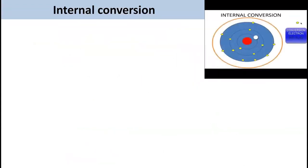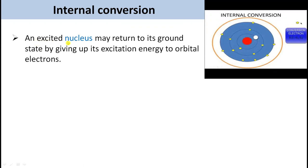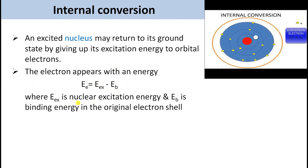Another source of fast electrons is internal conversion. An excited nucleus may return to its ground state by giving up its excitation energy to orbital electrons. The emitted electron has a kinetic energy equal to the lost nuclear excitation energy minus the binding energy of the electron in the atom. That is, the kinetic energy of this electron is equal to Eex minus Eb, where Eex is the nuclear excitation energy and Eb is the binding energy in the original electron shell.